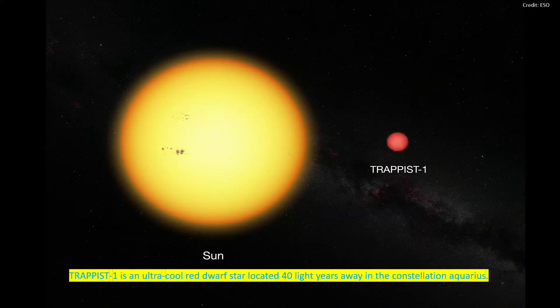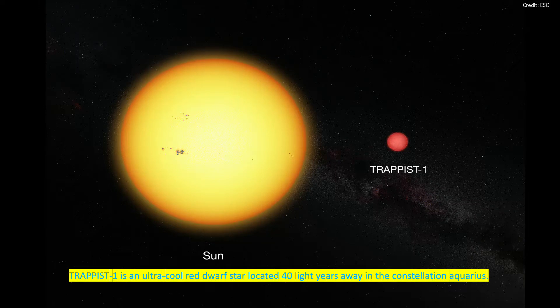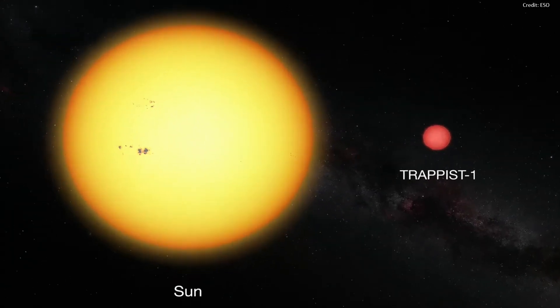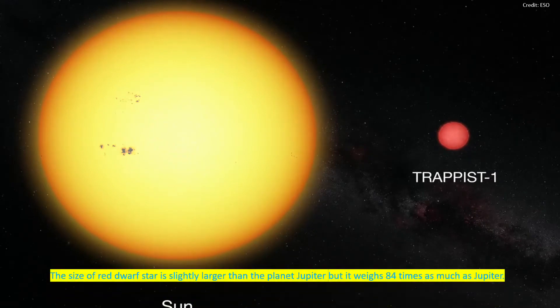TRAPPIST-1 is an ultra cool red dwarf star located 40 light years away in the constellation Aquarius. The size of the red dwarf star is slightly larger than the planet Jupiter but it weighs 84 times as much as Jupiter.